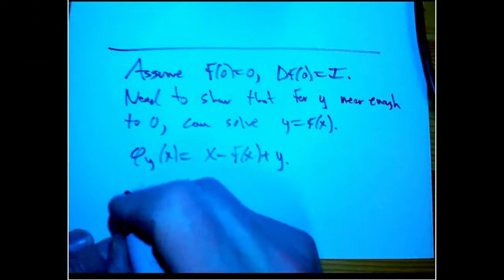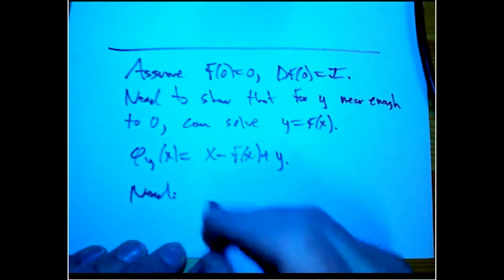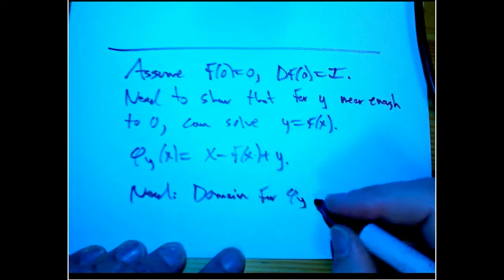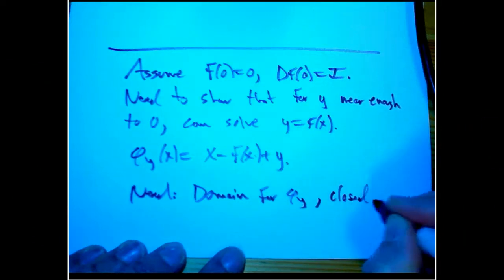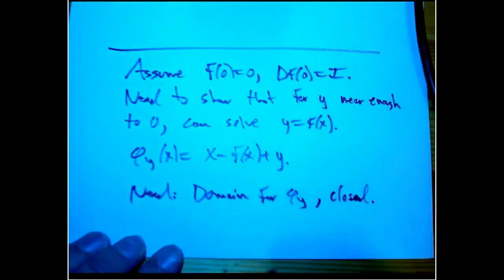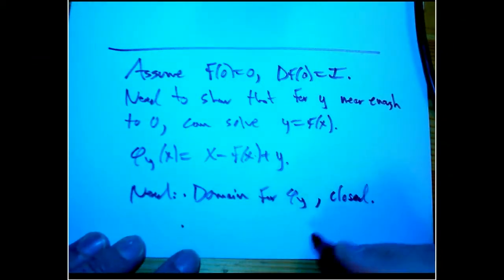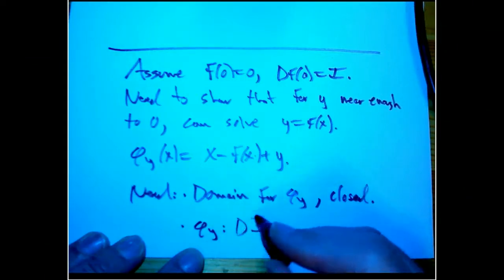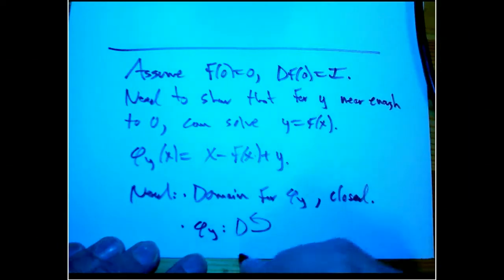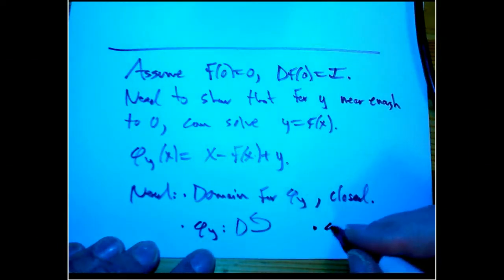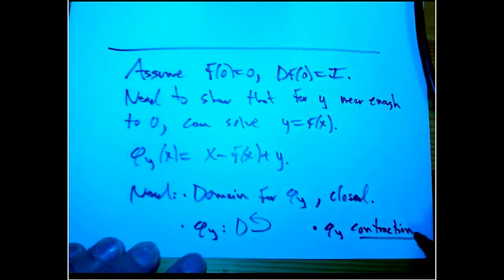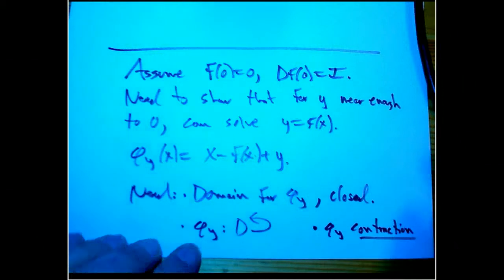So what do we need? We need to show we need a domain, an explicit domain for φ_y, and it needs to be a closed set, and it's going to be a closed ball. And we need to know that φ_y maps that domain, let's call it D, to itself. And we need to know that φ_y is a contraction mapping. And that's the interesting part, and that's the Lipschitz condition that has come into so much of the other stuff in the proof.